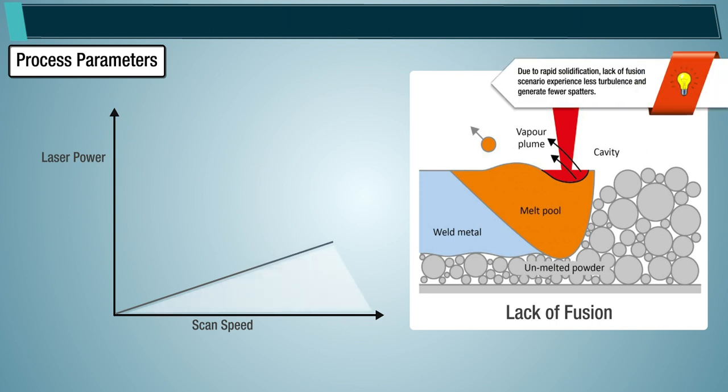Note: due to rapid solidification, lack of fusion scenario experience less turbulence and generate fewer spatters. This also leaves unmelted powder underneath, resulting in excessive porosity.